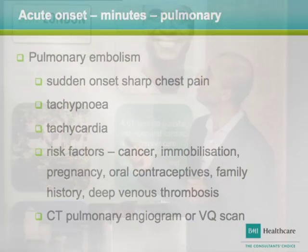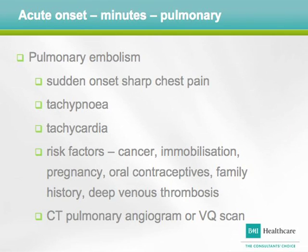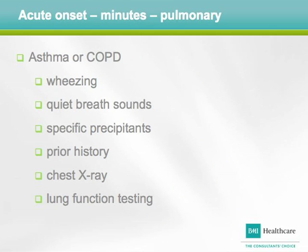Pulmonary embolism also presents with acute onset within minutes, similar chest pain and tachypnea, but patients also become tachycardic. Risk factors include underlying malignancy, prolonged immobilisation, pregnancy, use of contraceptives, and family history of deep venous thrombosis. Investigations of choice would be a CT pulmonary angiogram or a ventilation perfusion scan. Patients with asthma or COPD will complain of wheezing, quiet breath sounds, and may have specific precipitants. A chest x-ray and lung function testing help confirm the diagnosis.